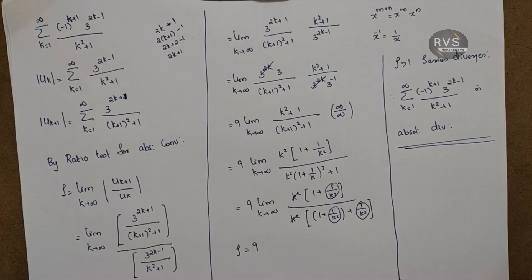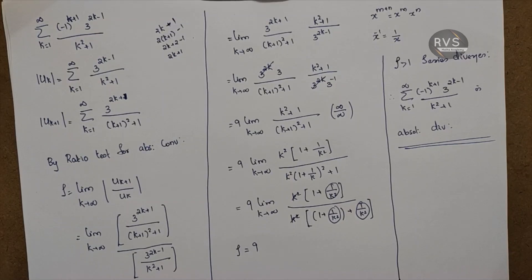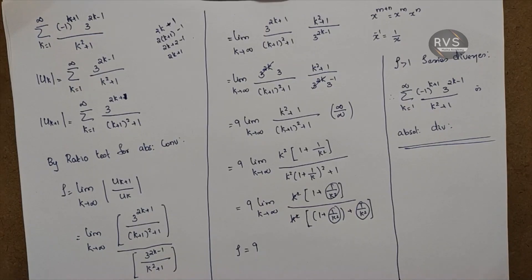In summary: when we have the ratio test, the first problem uses a geometric series. If we use limit comparison or root test, we get the answer. If the question has minus 1 raised to k, check absolute convergence. The answer will be either absolutely convergent or absolutely divergent.